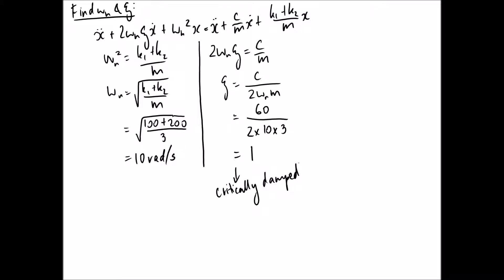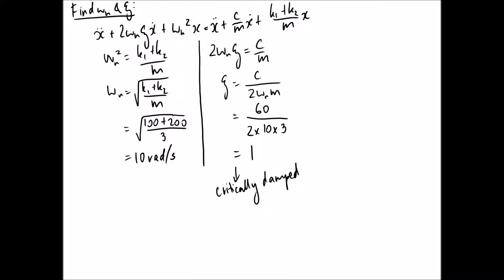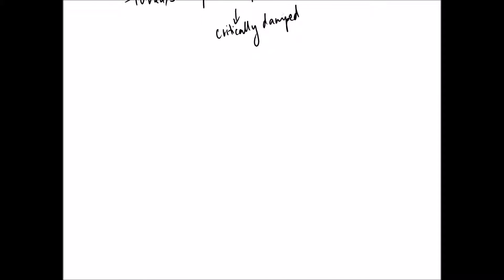Now we solve for x as a function of time. The general form of the solution depends on the damping ratio. For the critically damped case, referring back to the equations from the previous video, the solution takes the form x(t) = (A1 + A2·t)·e^(−ωn·t). There are two unknowns, A1 and A2, and we already know ωn.